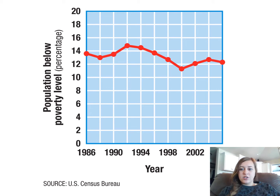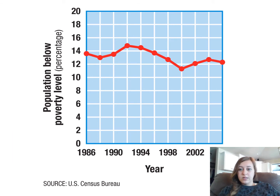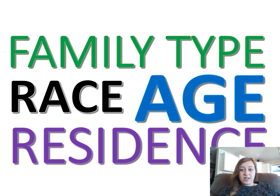Looking at the graph, the last data point shown is 2006, where about 12% of the population — roughly 37 million Americans — were living below the poverty threshold. We see the poverty rate floating around 10 to 14% of households across the period shown. That represents a lot of families.